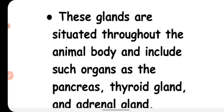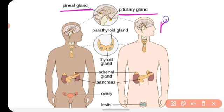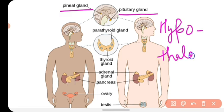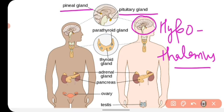If we talk about the brain, we have three main endocrine glands found there. The first is the pineal gland, located behind the midbrain. The second is the pituitary gland, found at the side of the brain. And the third is the hypothalamus. So these three endocrine glands are located in our brain.